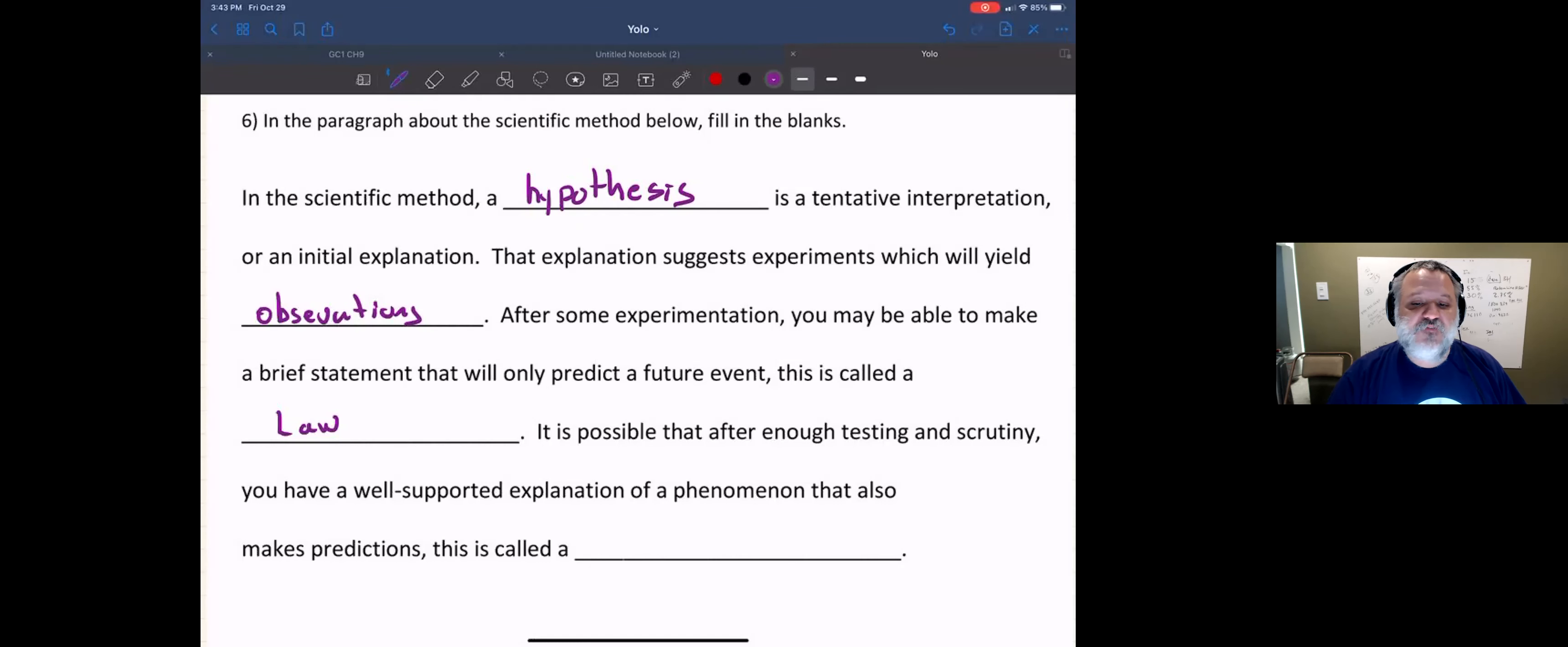Now, if you do enough testing and scrutiny, you can have a well-supported explanation of a phenomenon. This is the difference between law and theory. A well-supported explanation that also predicts is called a theory.